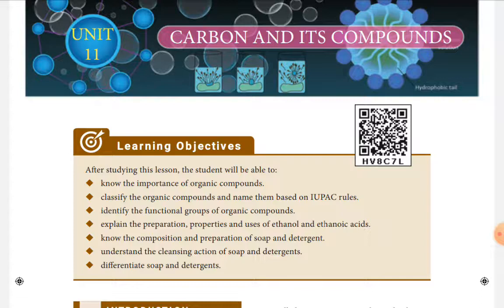Carbon always combines with other elements using covalent bonding, because there are 4 electrons in the outer shell. Carbon cannot donate or gain electrons. In such a situation, carbon is ready to share electrons between the combining atoms. Because of this unique nature, properties like catenation, tetravalency, and multiple bonding enable carbon to combine with itself or other elements like hydrogen, oxygen, nitrogen, and sulfur, forming a large number of compounds.